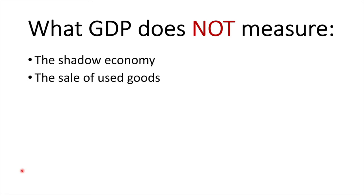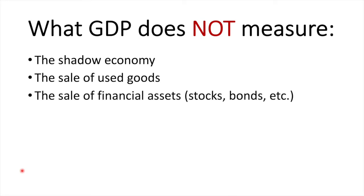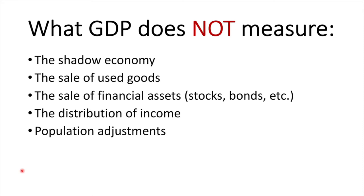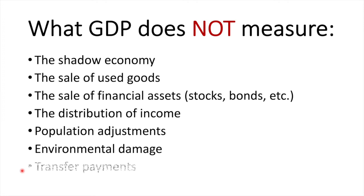The sale of used goods is not included — GDP only includes the sale of new goods, not second-hand or used goods. GDP does not measure the sale of financial assets such as stocks and bonds. GDP gives us a measure of national income but does not tell us how it is distributed amongst society. GDP is the total value of a country's output and does not factor in the size of the population. Environmental damage is not measured — damage to the environment is not counted, however large-scale production that harms the environment is. Transfer payments such as unemployment and social security are not included in GDP, as with a cash birthday gift, there's nothing new created in return for these payments.